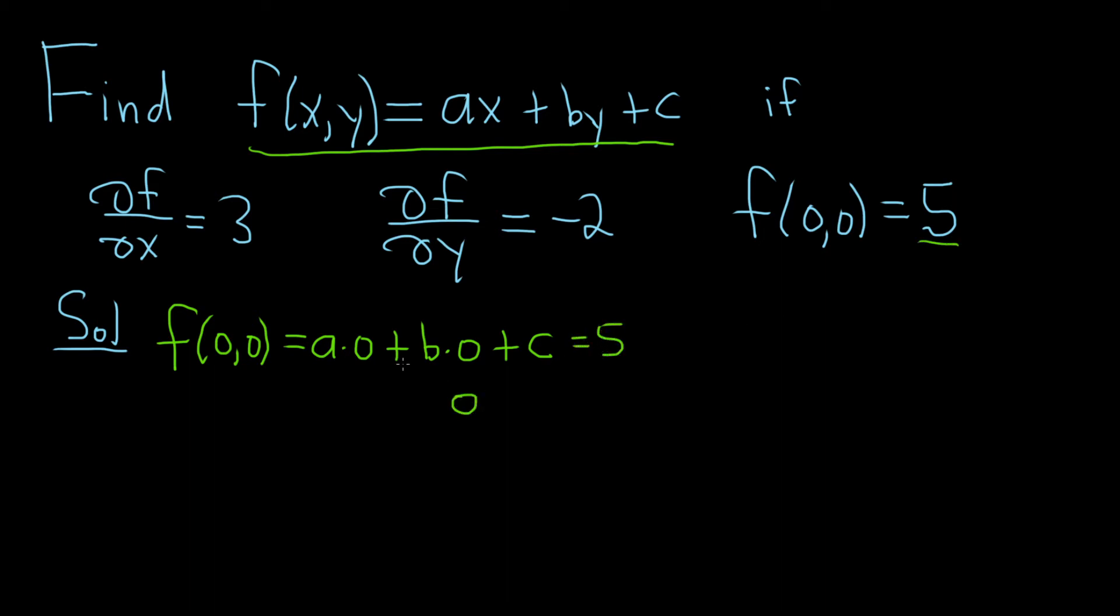So 0 plus c, right, these are both 0s, so you get 0 plus c equals 5. So we have c equals 5. I'm going to put that in a box because that's super important.